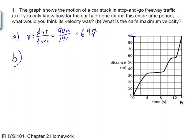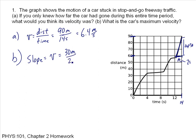Now for part B, what is the car's maximum velocity? The slope of a distance versus time graph is the velocity, so you want to find the point where you have the maximum slope. This line has the maximum slope. So I find the slope: delta Y is equal to 30 meters — from 60 to 90 is 30 meters — and delta X is approximately 2 seconds. So the slope equals the velocity, which is 30 meters over 2 seconds, giving 15 meters per second.